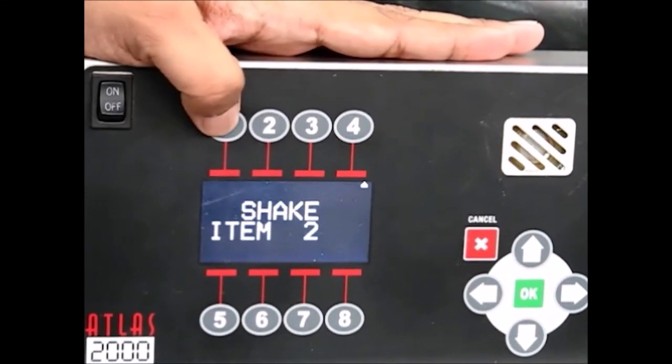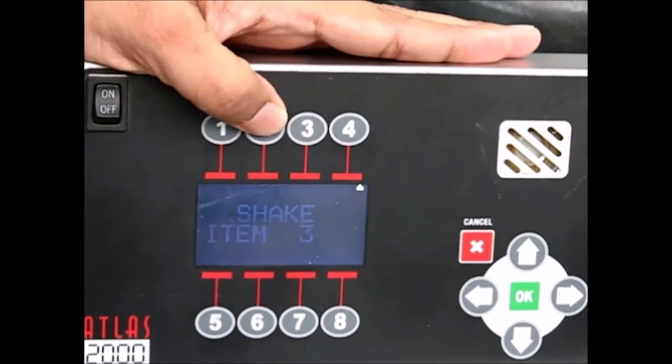By pressing button 2, you can check the time left for item 2, and so on for each item.